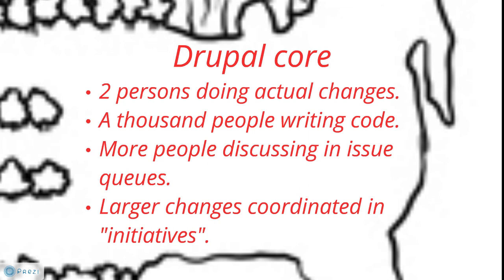It turns out it isn't a good idea to have half a million people making changes to the same code at the same time. The way Drupal works is that we have two persons — the maintainers — who can do the actual changes to core code and decide what changes go in and what doesn't. Then we have a thousand people — for Drupal 7 it was a thousand, for Drupal 8 it will probably be more — writing code and suggesting improvements, which are then reviewed by those two maintainers.